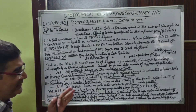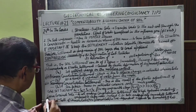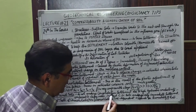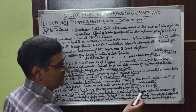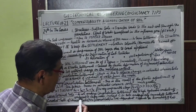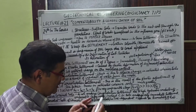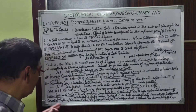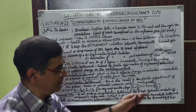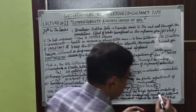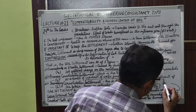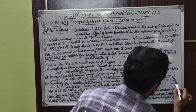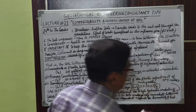Coarse-grained soils, that is sandy soils, do not undergo any consolidation settlement because of their high hydraulic conductivity in comparison to clayey soils. Instead, coarse-grained soils undergo only immediate settlement, which depends upon the SPT values — that is the Standard Penetration Test values — for that particular layer where sandy soil is encountered.